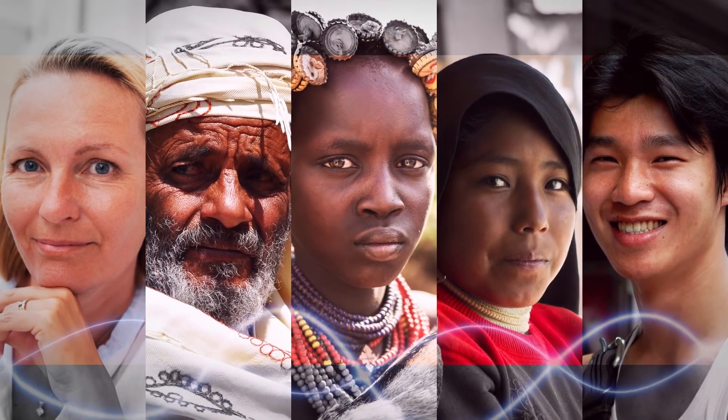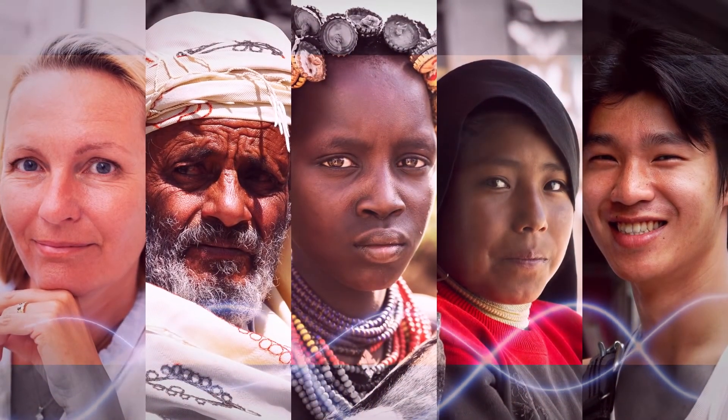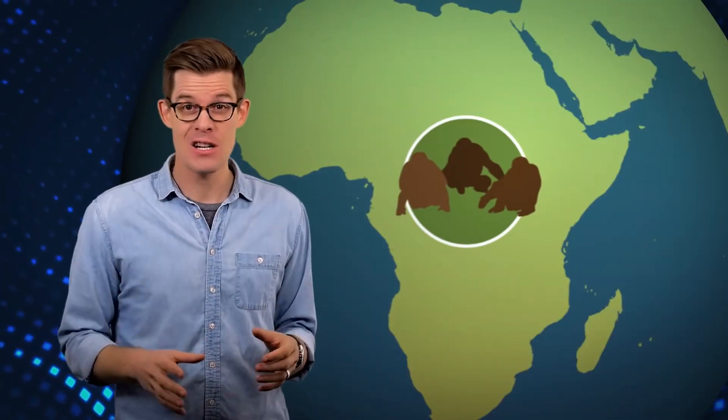Humans seem really different, but on a DNA level, we're remarkably similar. Groups of chimps in Central Africa living right next to each other show more genetic variation than we find in the entire human population. This genetic similarity tells us that our species is new in the big scheme of things, and that at one point our population was small, maybe as few as 10,000 of us.